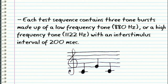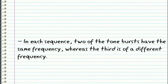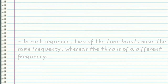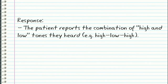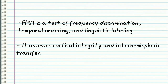Each test sequence contains three tone bursts made up of a low-frequency tone or a high-frequency tone with an inter-stimulus interval of 200 milliseconds. In each sequence, two of the tone bursts have the same frequency, whereas the third is of a different frequency. The patient reports the combination of high and low tones they heard — for example, high, low, high. This is a test of frequency discrimination, temporal ordering, and linguistic labeling. It assesses cortical integrity and interhemispheric transfer.